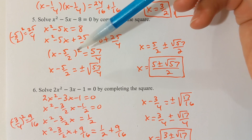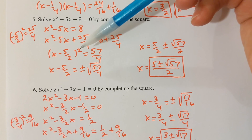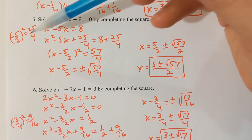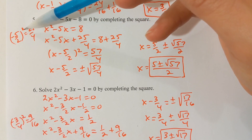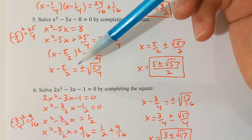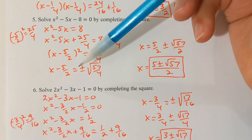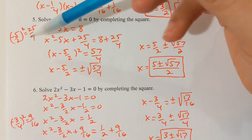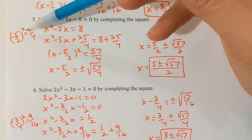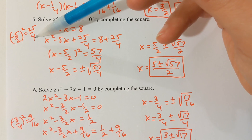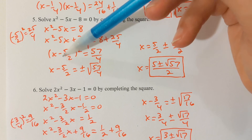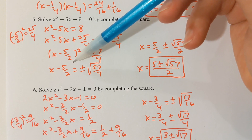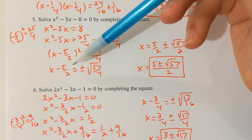The reason I know that right away is because it's always going to include the number that you're squaring in the previous line. Because I was squaring a negative 5/2 to get this 25/4, I'm going to have minus 5/2 in the two factors. That will always happen.